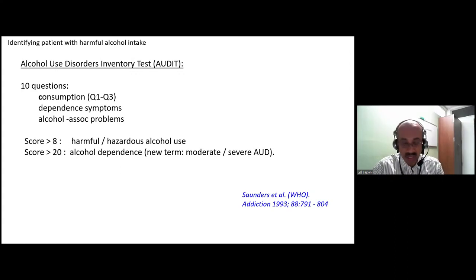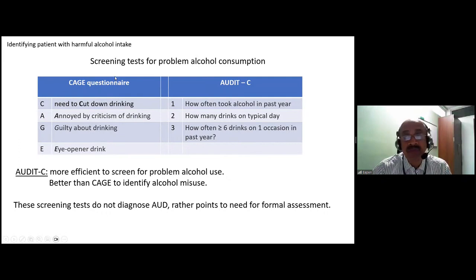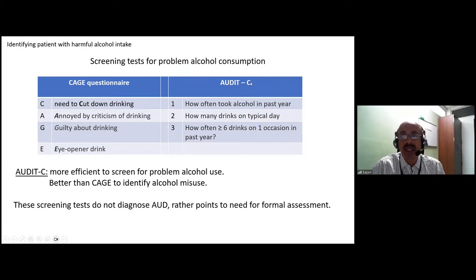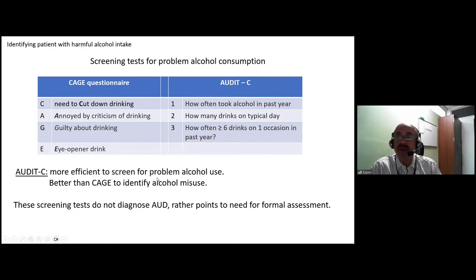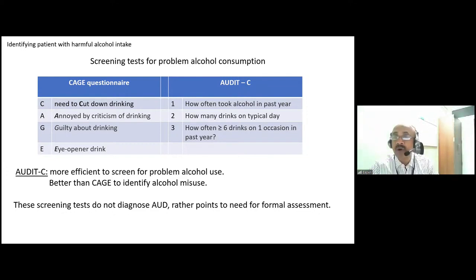The most commonly used abbreviated screening tools are the CAGE questionnaire and the AUDIT-C. AUDIT-C refers to the first three questions of the AUDIT questionnaire - the C refers to consumption of alcohol. Studies have compared both tools and found that AUDIT-C is more efficient to screen for problem alcohol use and better than CAGE to identify alcohol misuse. However, these screening tests do not diagnose alcohol use disorder - they point to the need for formal assessment.